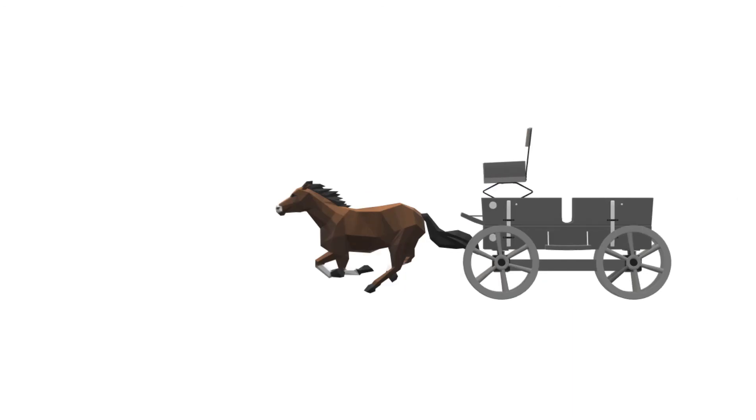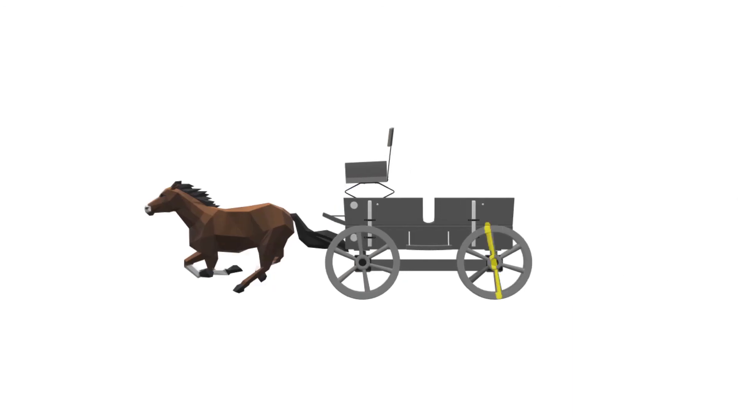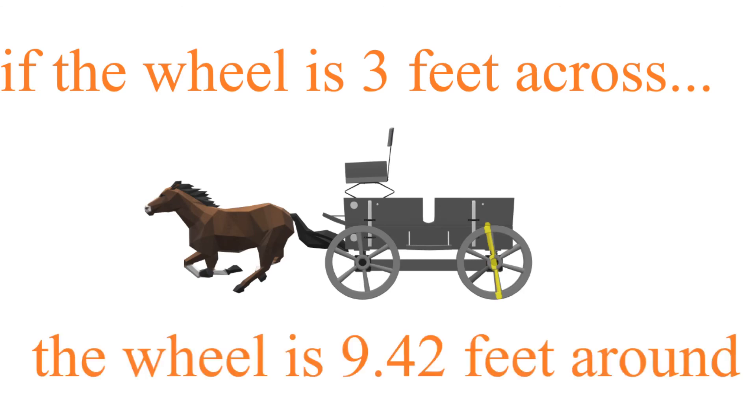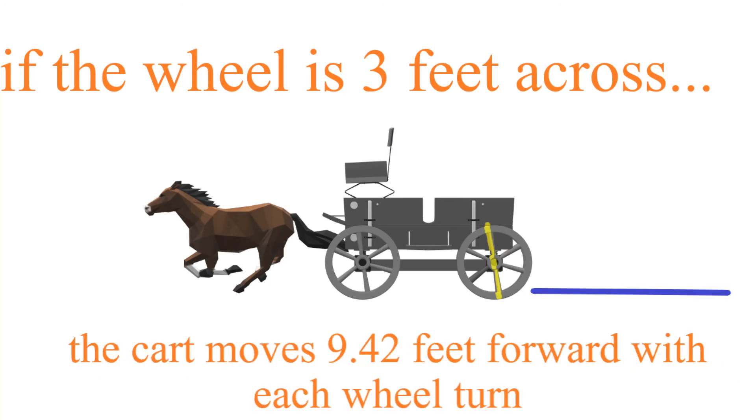The horse pulls the cart forward. If the diameter is 3 feet across, we know the wheel is 9.42 feet around. And we also know the cart has advanced 9.42 feet forward each time the wheel makes a full revolution.